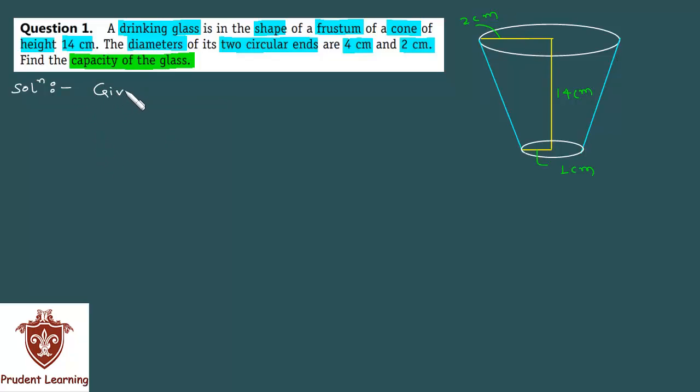Here we are given that height of the frustum is 14 cm, radius of the upper circular end is 2 cm, let us call it as r1, and radius of the lower circular end is 1 cm, let us call it as r2.